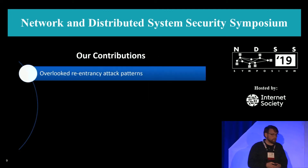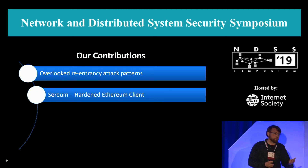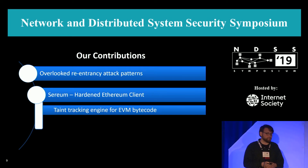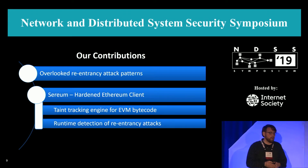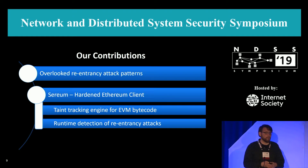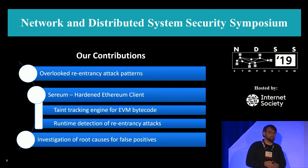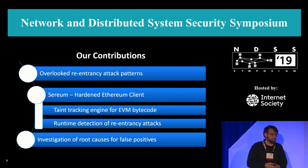Our contributions are: first, we describe some overlooked re-entrancy attack patterns which are not well handled by existing tools. Then we present Serium, which is our hardened Ethereum client. Serium includes a taint-tracking engine for EVM bytecode — we don't require any source code, we just rely on what is stored on the public Ethereum blockchain. Based on this, we developed runtime detection for re-entrancy attacks. Finally, we performed an investigation of root causes for our false positives, which are also interesting for other analysis tools because it shows that analyzing EVM bytecode is not always easy.